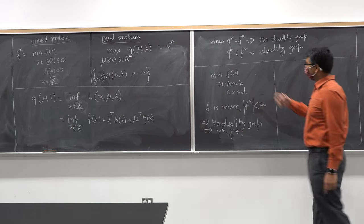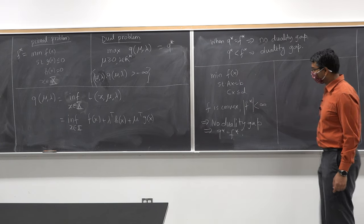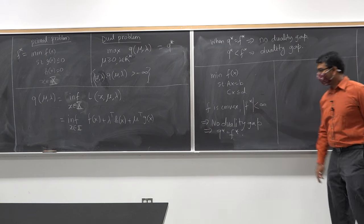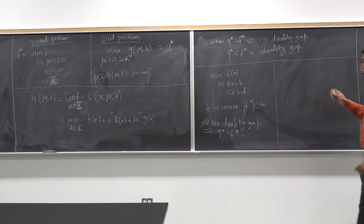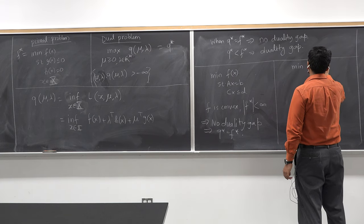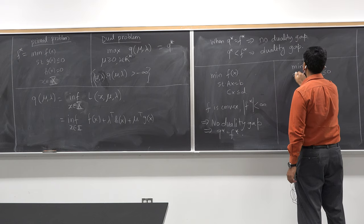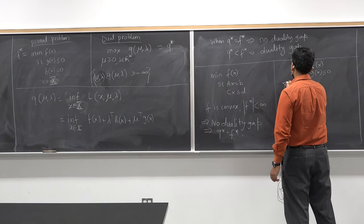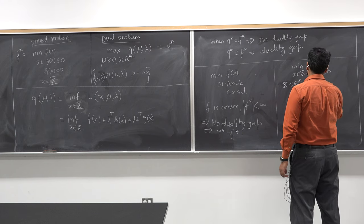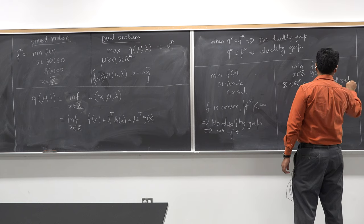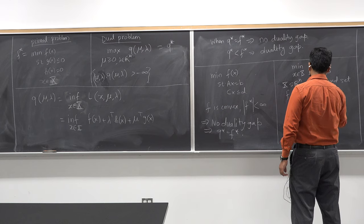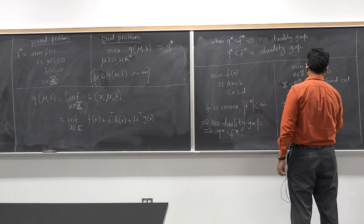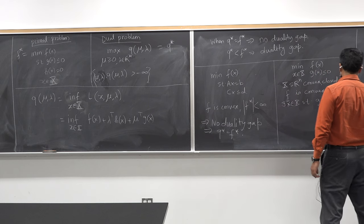This is the first situation when there is no duality gap — when f is convex and these are of course linear constraints. One can show using some mathematical theory that q star will always be equal to f star, so there is no duality gap. Now let's look at the second condition: I want to minimize f such that g_j of x is less than or equal to 0, x is in some capital set X, and X is a convex closed set.